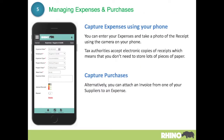When you buy something, you can go into the expenses, add a new expense, take a photograph of the receipt, and you no longer have to keep the original receipt. Tax authorities in the UK have accepted electronic copies of receipts for more than 10 years now.